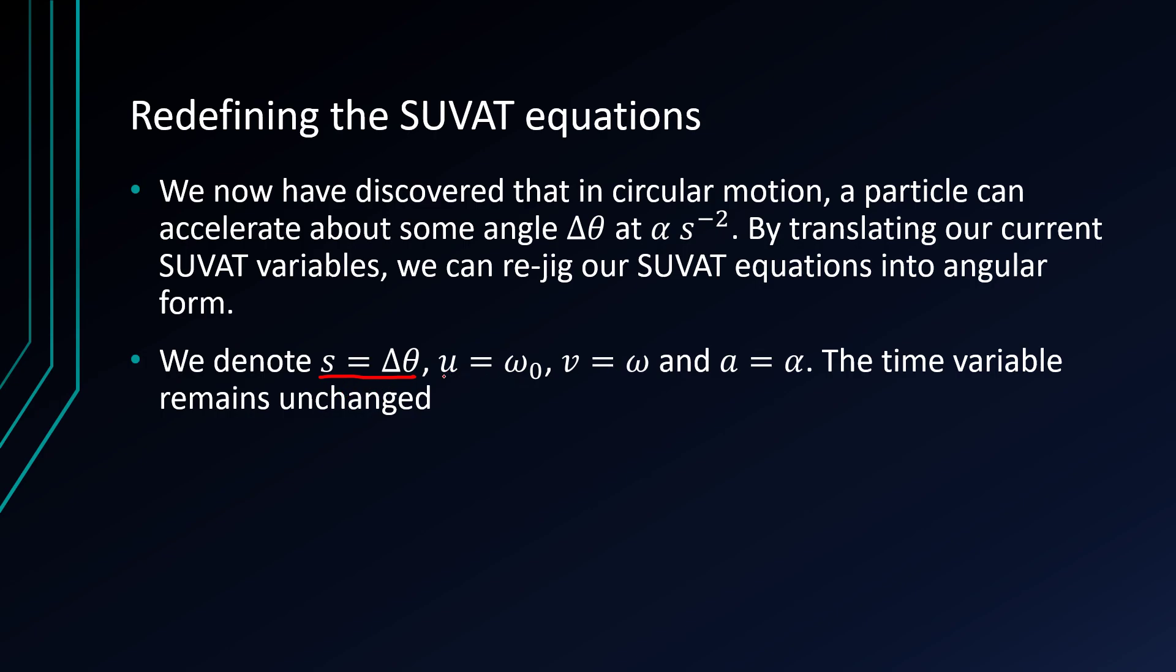And the initial velocity we consider as omega nought. You would see that in some textbooks, the initial velocity is written as V nought, but I write it as U for clarity. But for the angular case, it's going to have to be U equals omega nought. And then of course, V equals omega and A equals alpha. Time remains unchanged.